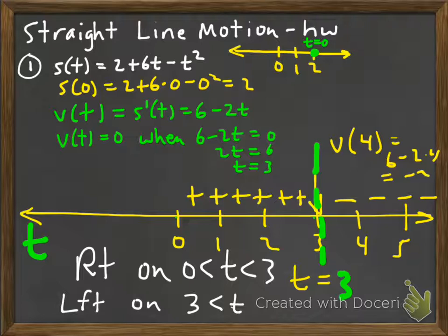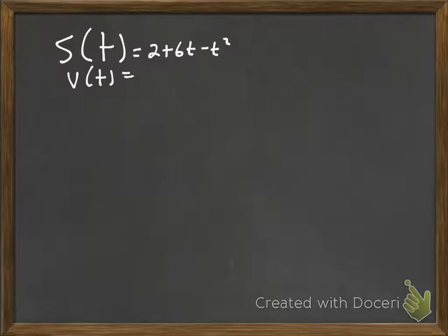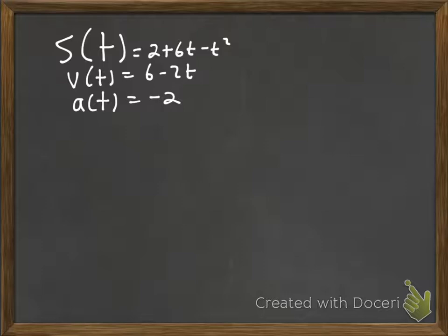Let's remember what we have: s(t) = 2 plus 6t minus t squared, v(t) = 6 minus 2t, and the acceleration — which is the derivative of velocity — is negative 2. So the acceleration is always negative, meaning there's always a push to the left, like the wind always blowing left.